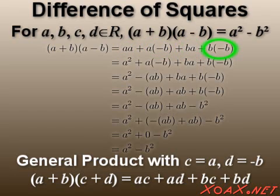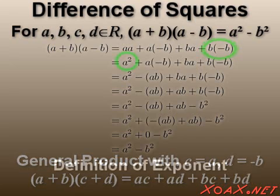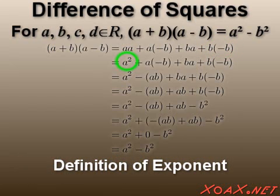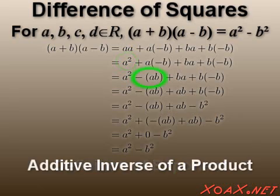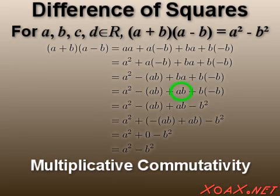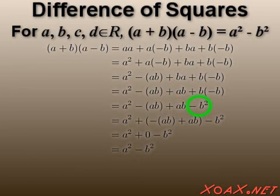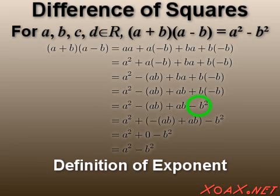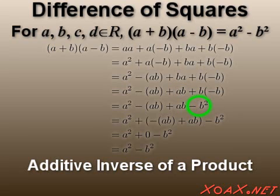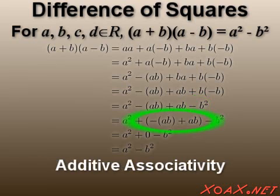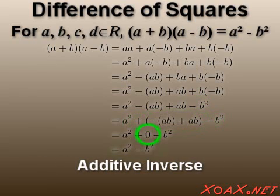The first term is a² by the definition of exponents. The second term is -ab by the additive inverse of a product rule. The third term is ab by commutativity, and the fourth term is -b² by the definition of exponents and the additive inverse of a product. The two middle terms are additive inverses, so the final product is a² - b² by the additive identity.